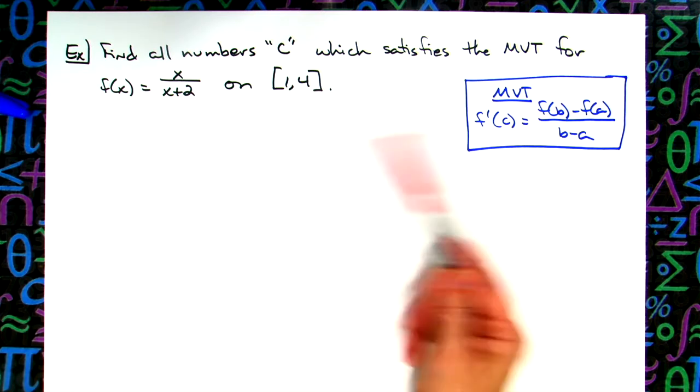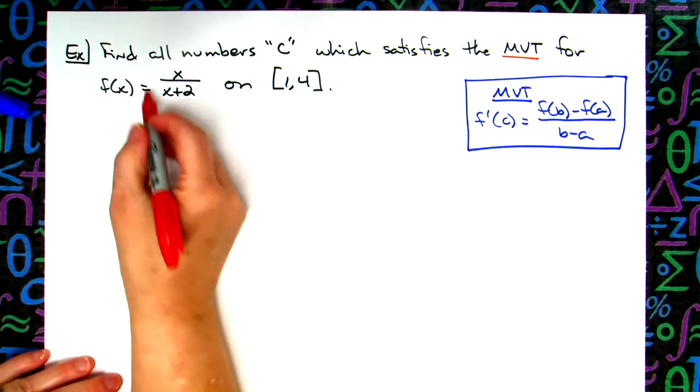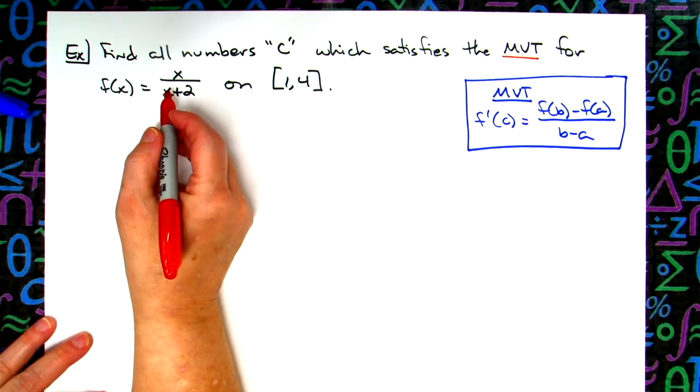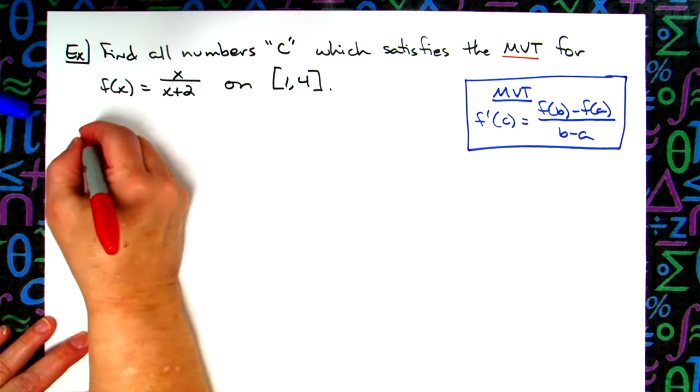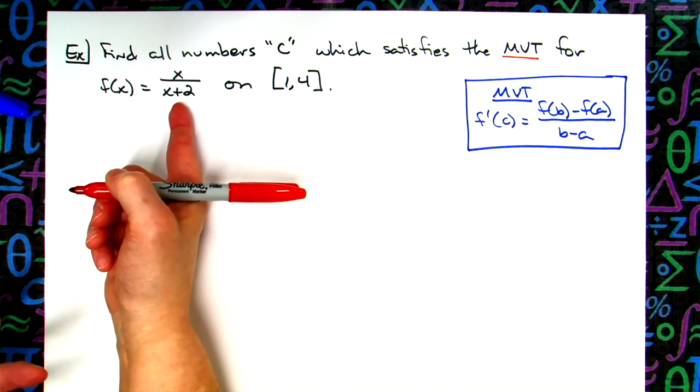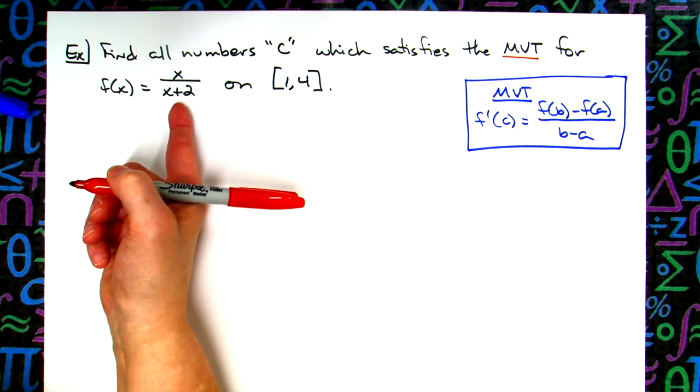Now to make sure that the mean value theorem applies, there's a couple of conditions. We need to take a look at this function and make sure that it is continuous on the interval from 1 to 4. If you sketch that or put it in a graphing calculator, you can see it's got a vertical asymptote at x equals negative 2.